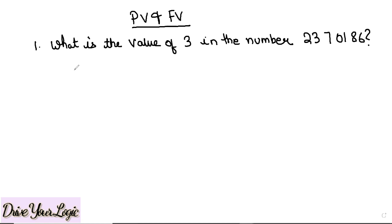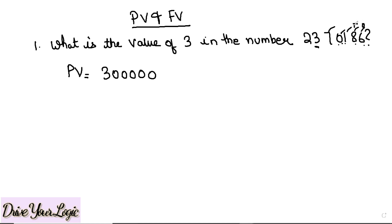This is our question: what is the place value of 3 in the number 2,370,186? No need to worry about the big number. The place value of this 3 — you just write down 3 and count how many digits come after it: 1, 2, 3, 4, 5 — five digits — so you put five zeros. So the place value is 300,000, which you can also write in numeration as three lakh. And the face value is simply 3 — the number itself. Very easy!